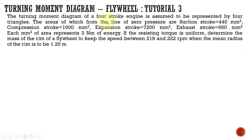The turning moment diagram of a four-stroke engine is assumed to be represented by four triangles. The areas from the line of zero pressure are: suction stroke 440 mm², compression stroke 1600 mm², expansion stroke 7200 mm², and exhaust stroke 660 mm². Each mm² of area represents 3 Nm of energy. If the resisting torque is uniform, determine the mass of the rim of a flywheel to keep the speed between 218 and 222 RPM, when the mean radius of the rim is 1.25 meters.